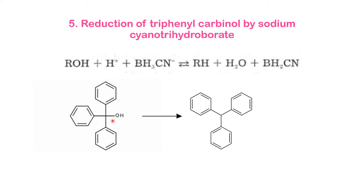Triphenylmethane can also be obtained from triphenyl carbinol, which has a hydroxyl group on the central carbon atom. This needs to be reduced — removal of the OH and addition of H. This is possible with a special reducing agent: sodium cyanoborohydride (NaBH3CN). Upon dissociation it forms Na⁺ and BH3CN⁻. When triphenyl carbinol is treated with this reagent, dehydroxylation occurs with loss of water, giving the desired product triphenylmethane.